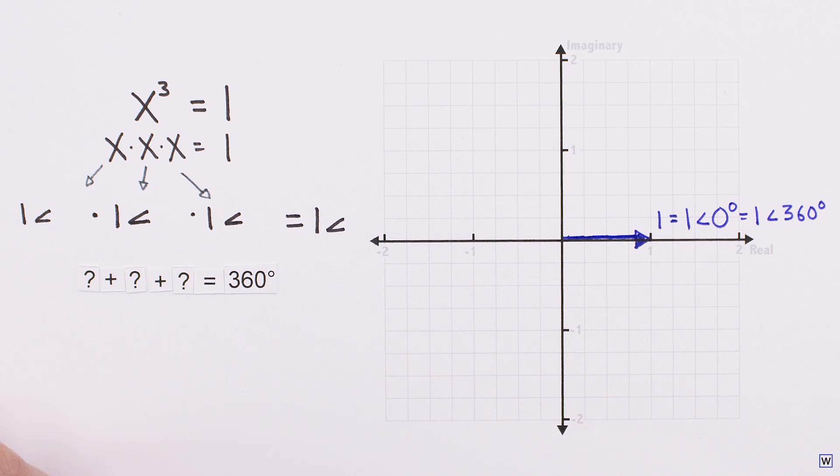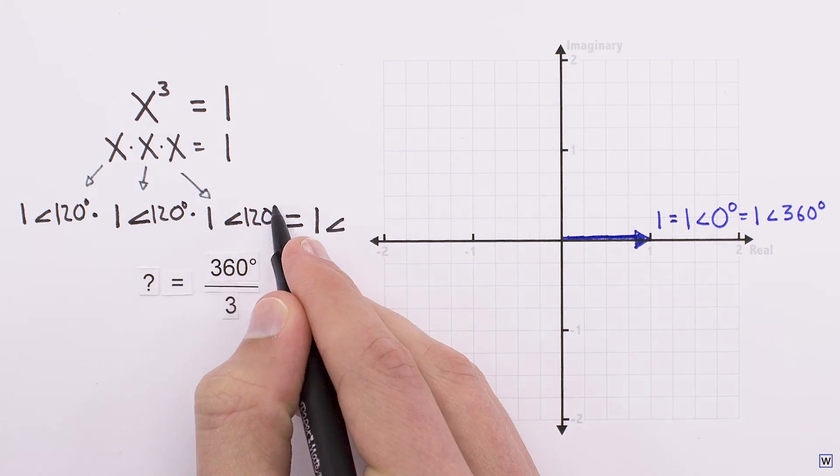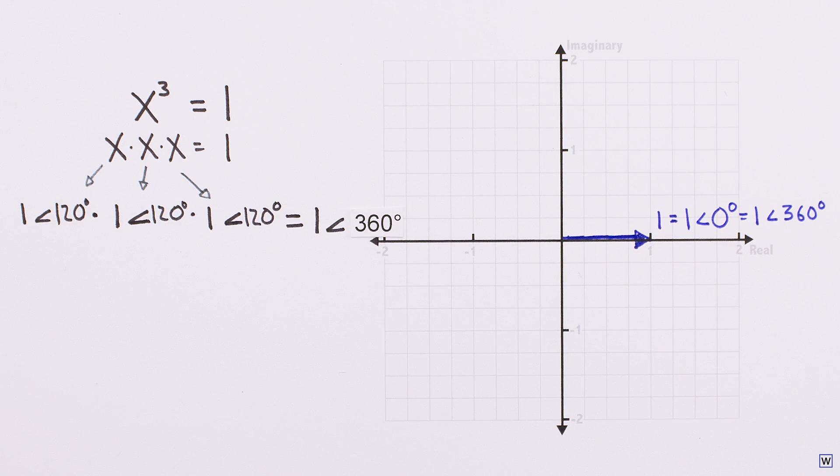Since we're dividing 360 into 3 even parts, the right answer here is 360 divided by 3, or 120 degrees. When we put this together with the magnitude of 1, we have a second solution.